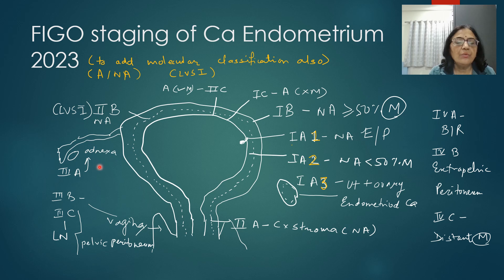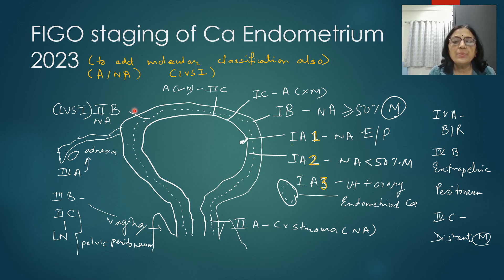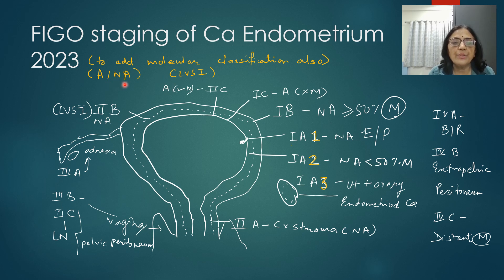Stage 3A is adnexal involvement. Stage 3B is vaginal or pelvic peritoneal involvement. Stage 3C is lymph node involvement — para-aortic or pelvic. Stage 4A is bladder or rectal mucosal involvement. Stage 4B is extra-pelvic peritoneum, and Stage 4C is distant metastasis. For Stage 2: 2A is cervical stromal involvement (non-aggressive), 2B is substantial lymphovascular space invasion (LVSI), and 2C is aggressive tumour involving the myometrium. It is recommended to add molecular classification alongside staging whenever feasible.